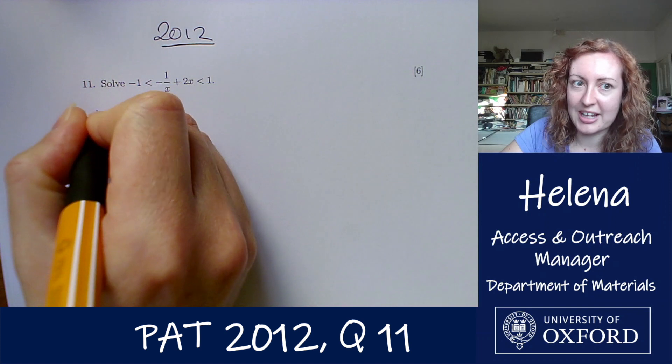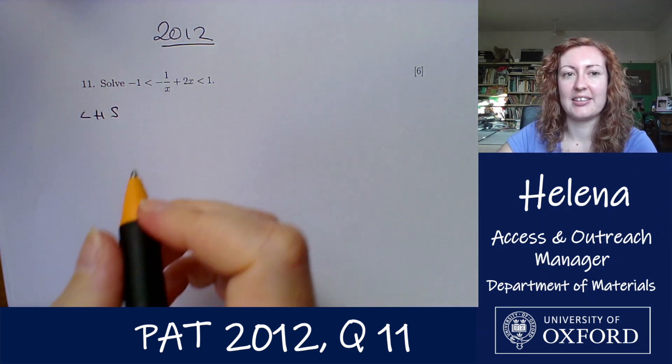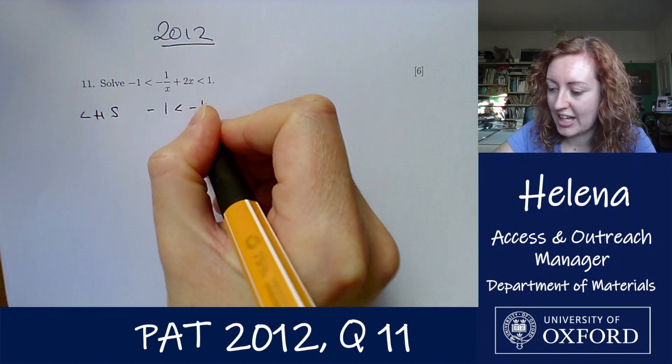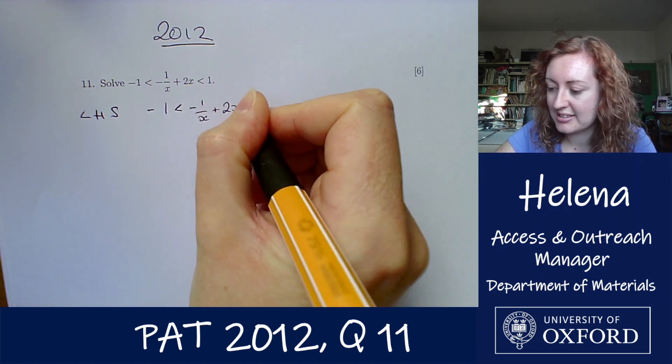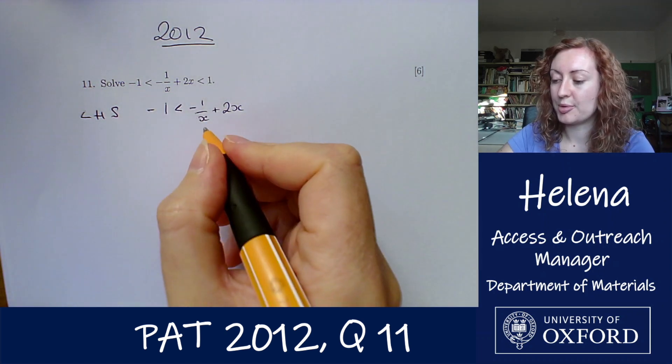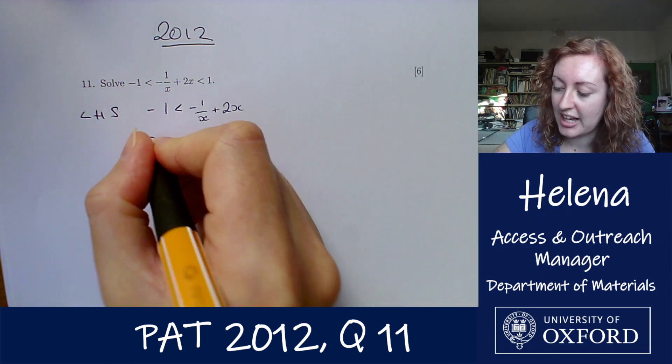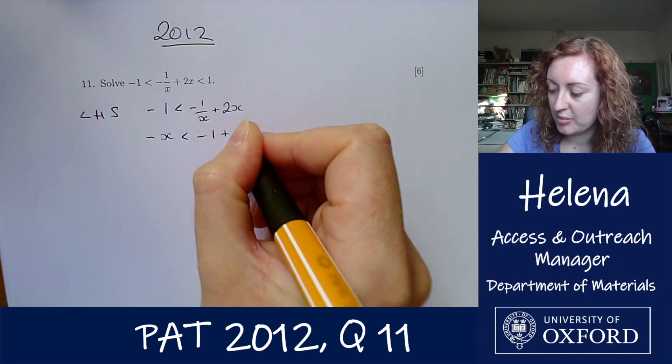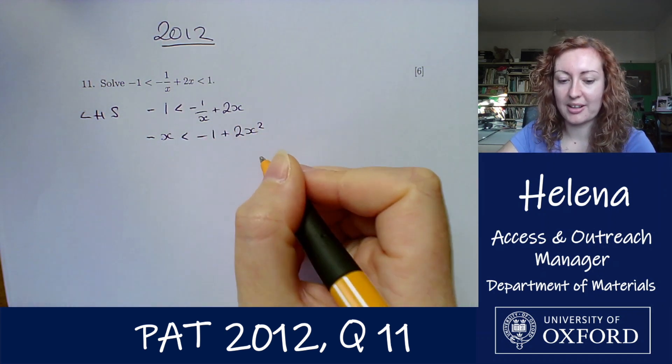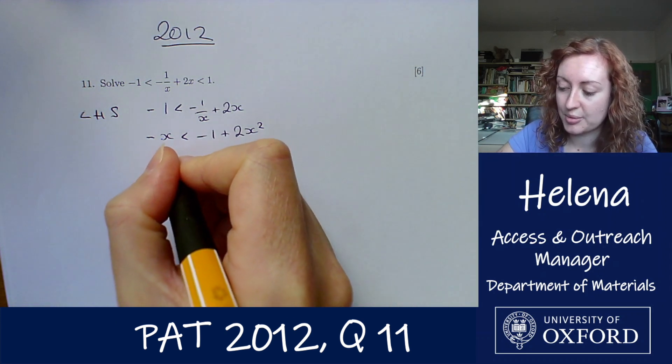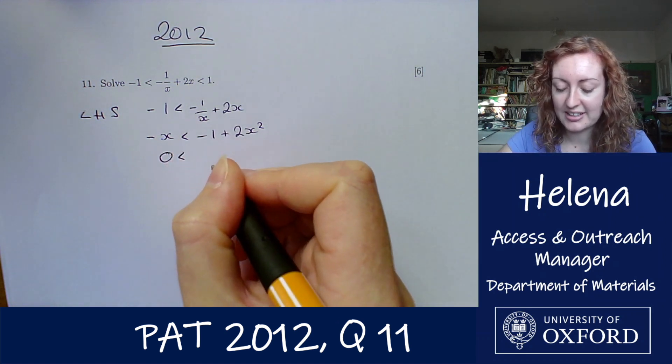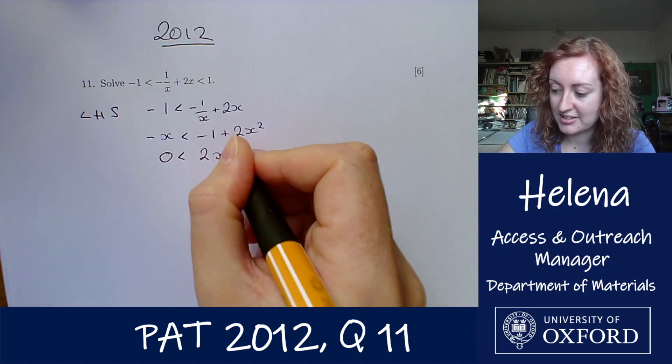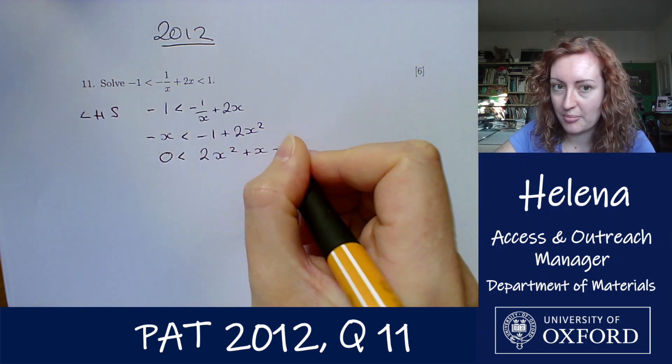So first of all let's look at the left hand side here. We have this minus 1 which is less than minus 1 over x plus 2x. So if we multiply that by x to get it onto one line we have minus x less than minus 1 plus 2x squared. So we're getting a quadratic here that we're going to have to solve. Let's get this all onto one side of the inequality sign.